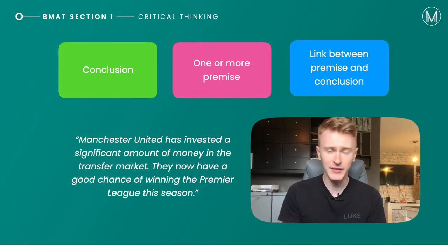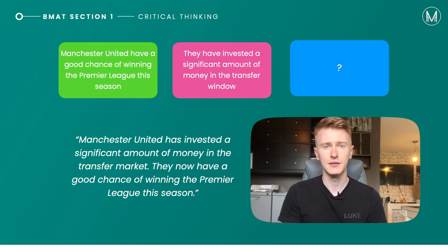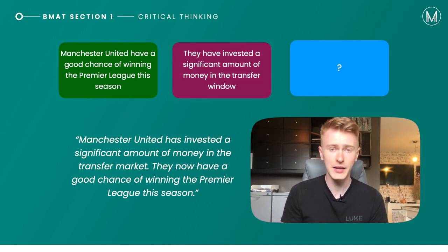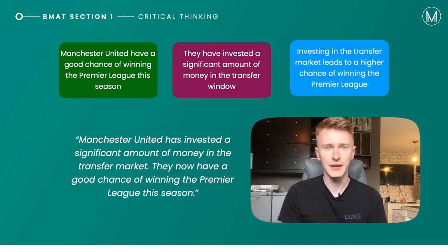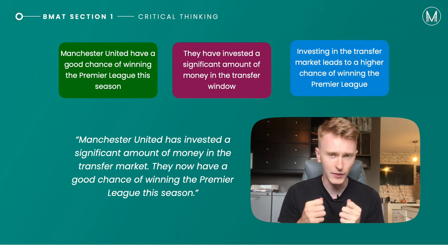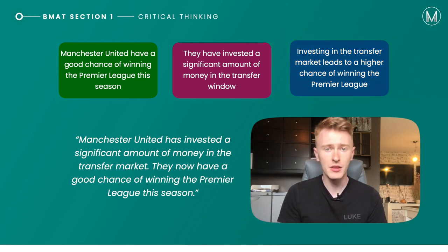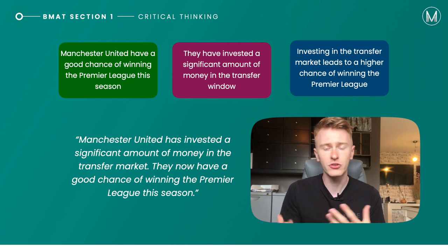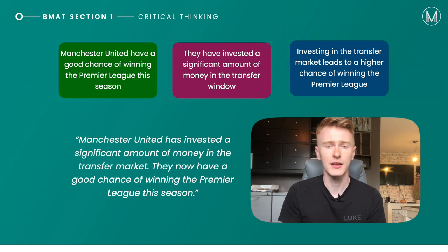For example, this passage is about Manchester United investing a significant amount of money in the transfer market so they have a good chance of winning the Premier League. The conclusion is that they have a good chance of winning the Premier League. The premise is that they've invested a significant amount of money. So the assumption is that investing in the transfer market leads to a higher chance of winning the Premier League — in other words, the more money you spend the more successful you will be. The layman might link those two almost intuitively, but this is nonetheless an assumption the author has made to reach the conclusion.